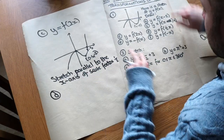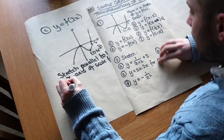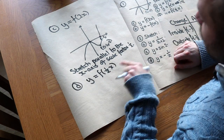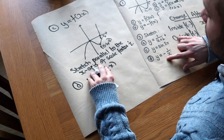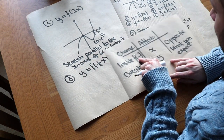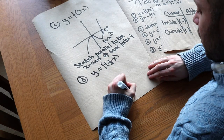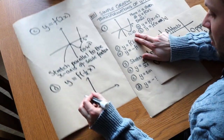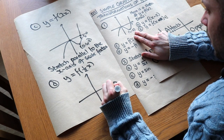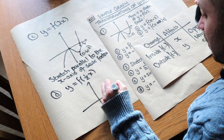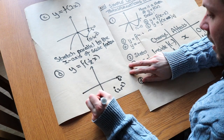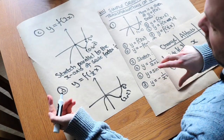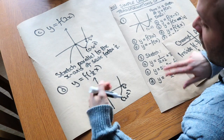For part d, y equals f of half x. That half is inside the function, so we do the opposite of halving — we double the x values. The minimum point (1, −2) becomes (2, −2). The x-intercept at 3 becomes 6. The point (0, 0) stays the same. This would be described as a stretch parallel to the x-axis of scale factor 2.